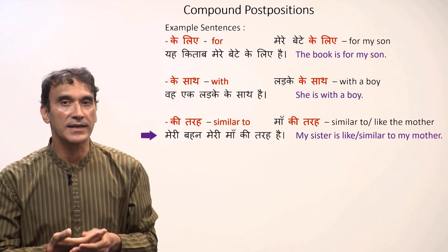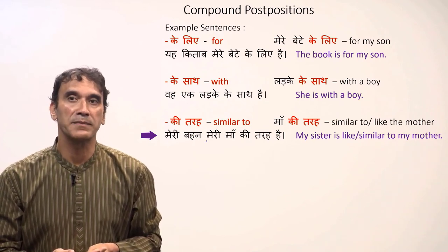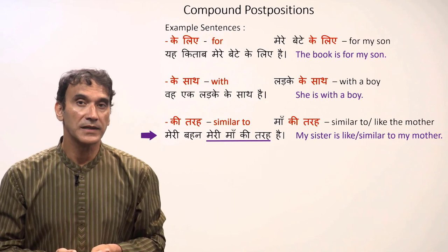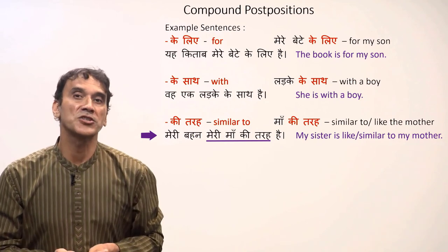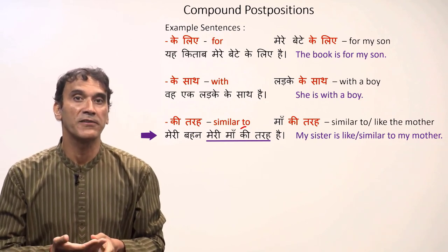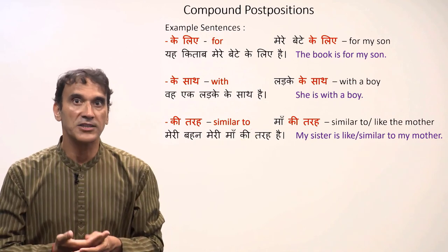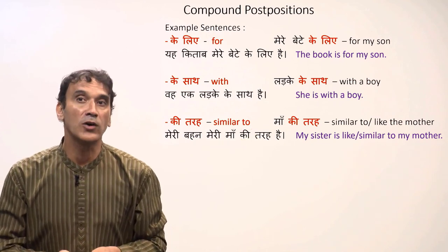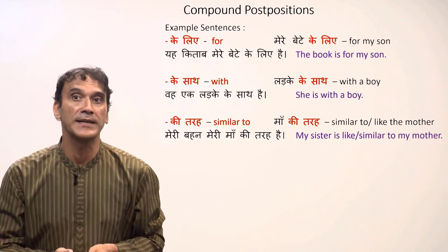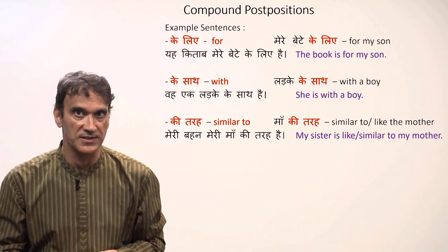And the last example: meri behen meri maa ki tarha hai — 'my sister is like my mother.' The postposition here is ki tarha, one of the rare postpositions starting with ki. Just remember: nouns, adjectives, and possessives will decline or change before compound postpositions.